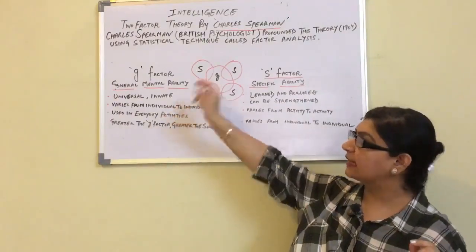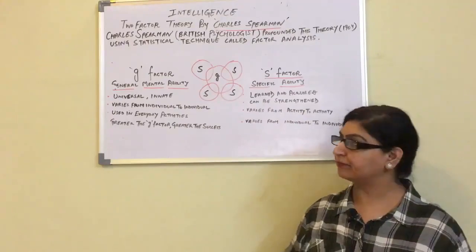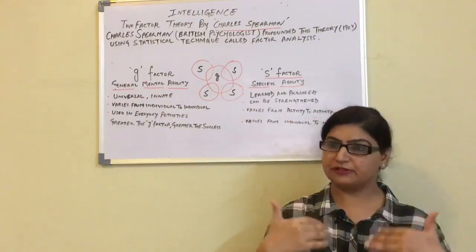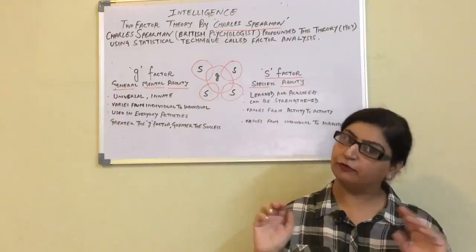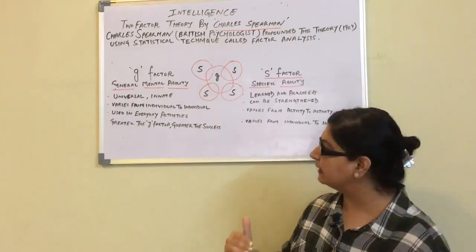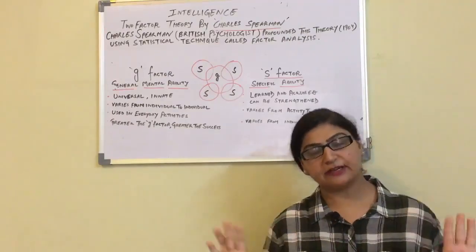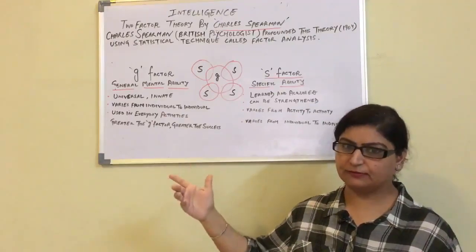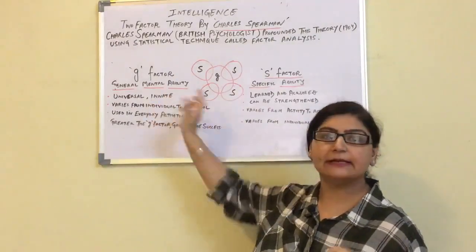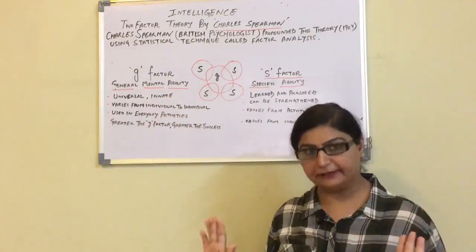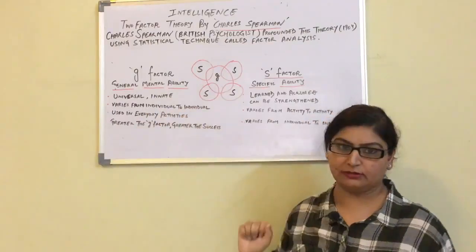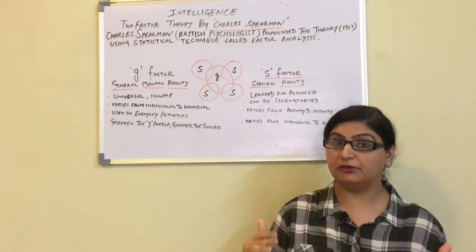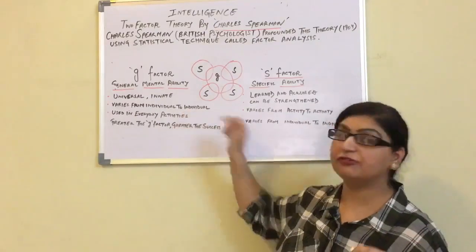Let us understand the characteristics of G-factor. It is universal — it is present in you, in me, in everyone. We all have G-factor. It is universal and it is an innate, inborn ability. It varies from individual to individual — we all have G-factor, but we vary in it.